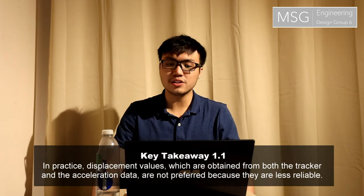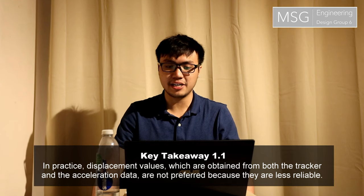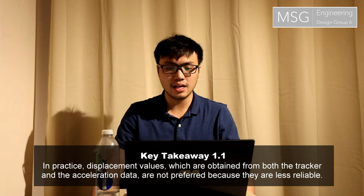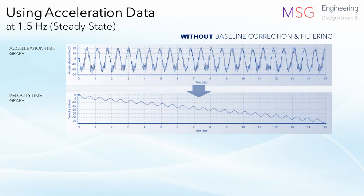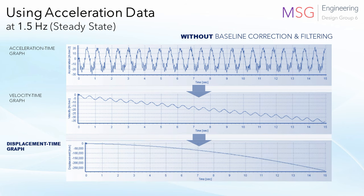Here are some key takeaways from this project. Firstly, displacement values obtained from both the tracker and the acceleration data are not often used in practice because they are less reliable, as demonstrated by the poor estimates of displacement we saw earlier. Taking the 1.5Hz steady state as an example, using the acceleration data to obtain displacement values would require baseline correction and filtering; otherwise, the results do not make sense, as seen here.